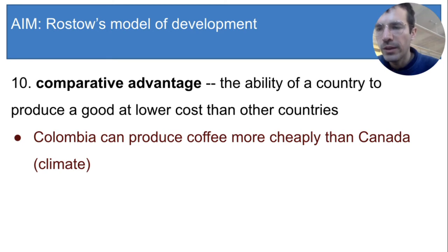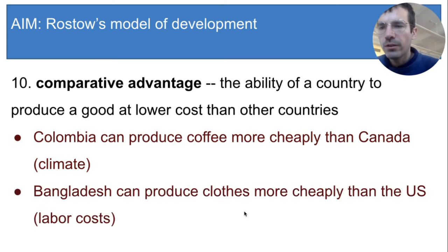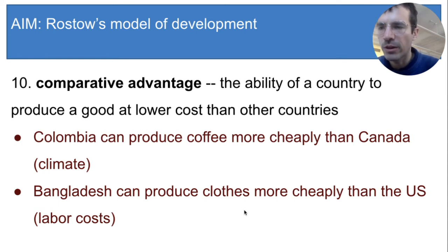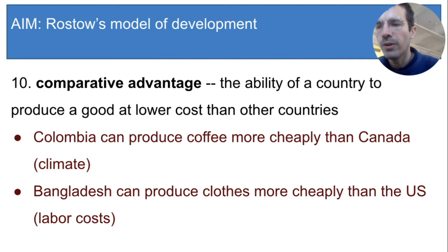According to Rostow's model, that means Colombia should focus its economy on coffee — most people there should work in coffee production. Another example: Bangladesh can produce clothing more cheaply than the United States, because Bangladesh has many people willing to work for cheaper wages. So Bangladesh has a comparative advantage over the US in clothing manufacturing. Notice that this also differs from the self-sufficiency model, which said governments should spread investment across all sectors. Rostow says just focus on the one thing you have a comparative advantage in, and invest less in other areas.